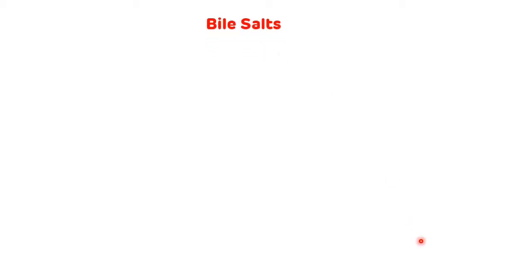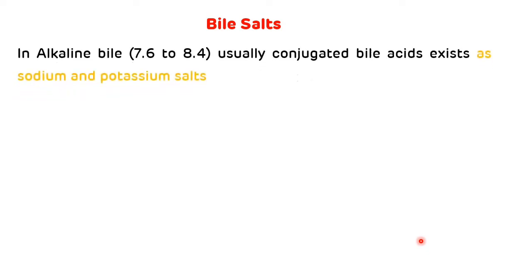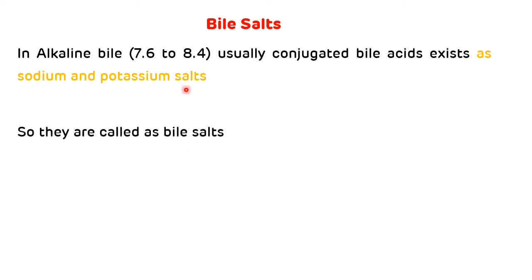First, what are bile salts? In alkaline bile, conjugated bile acids usually exist as sodium and potassium salts. These sodium and potassium salts of conjugated bile acids are called bile salts — that is, sodium taurocolate, sodium glycocolate, potassium taurocolate, and potassium glycocolate.